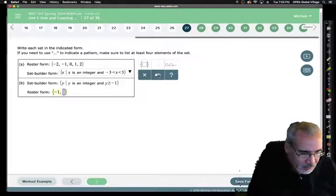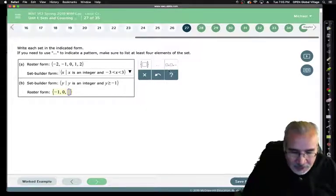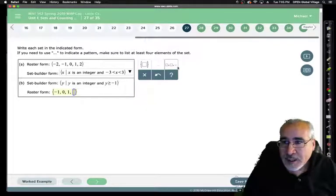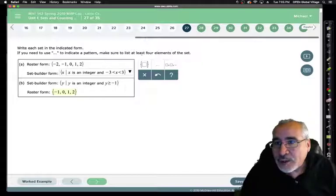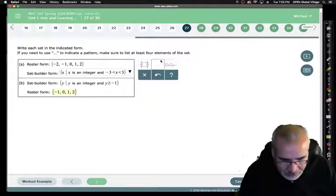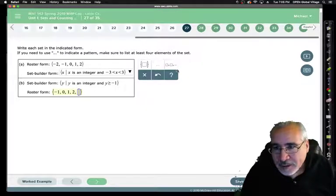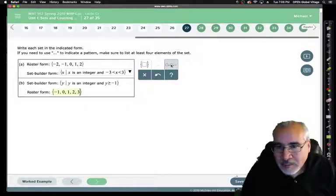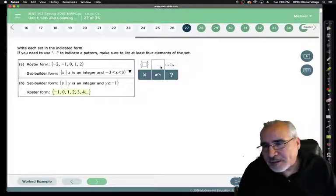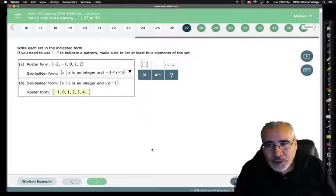What's bigger than negative 1? 0, comma, 1, comma, 2. It says make sure to use at least 4. So hey, they asked for 4, let's give them 5. Why not? Give them 6. And then we can stop. Whatever you want, but do at least 4.